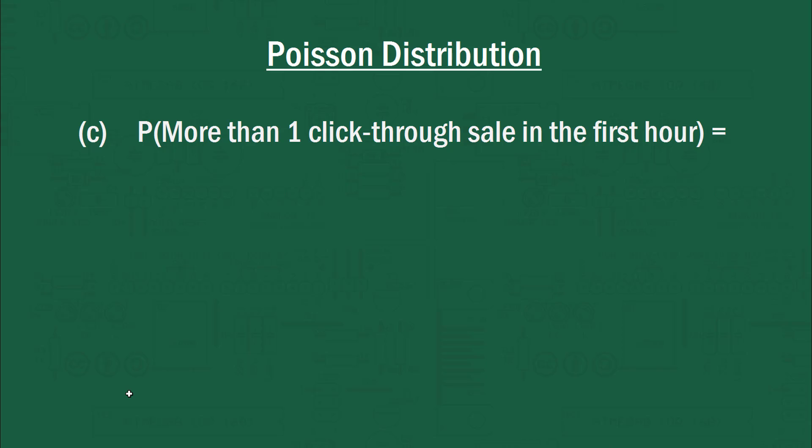What about the probability that we have more than one click-through sale in the first hour? Well, this is where the properties of a Poisson distribution show themselves. If we know there's an average of 12 click-through sales in the first day, if it's truly a Poisson distribution, the mean number of sales per hour will be 0.5 because all we do is just divide by the total number of hours. So this becomes our new value of lambda.